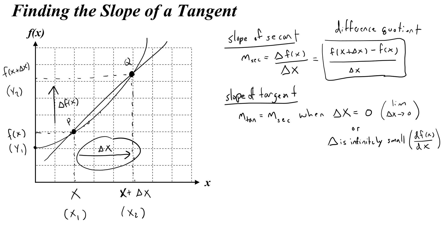These are called differentials or infinitesimals because they are infinitely small. The slope of the tangent equals the slope of the secant when delta x is basically zero. We can say that one of two ways: the limit of delta x approaches zero, or this infinitely small change in f over the infinitely small change in x.